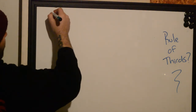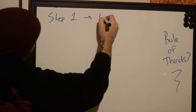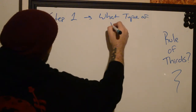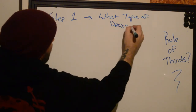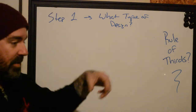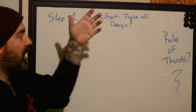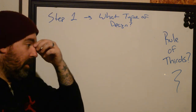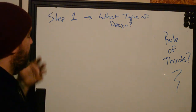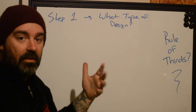Step one with rule of thirds: we've got to figure out what type of design we're going to do. Whether we do traditional, neo-trad, something realistic, whatever — what we're going to try to do is identify what amount of contrast is going to be needed, if there's going to be color or not, if it's going to be black and gray, whatever. And then we're going to start to filter down exactly what we're going to need to do.